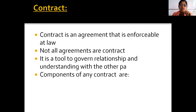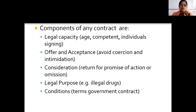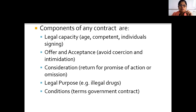For that, we should understand what are the components of the contract. A contract should always have a legal capacity — in terms of age, competency, and individuals signing. The second component is offer and acceptance: both parties should accept the offer and accept the contract; then only it will be a valid contract.